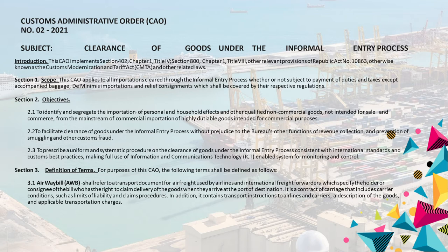Section 1. Scope. This CAO applies to all importations cleared through the informal entry process whether or not subject to payment of duties and taxes, except accompanied baggage, to minimize importations and relief consignments which shall be covered by their respective regulations.